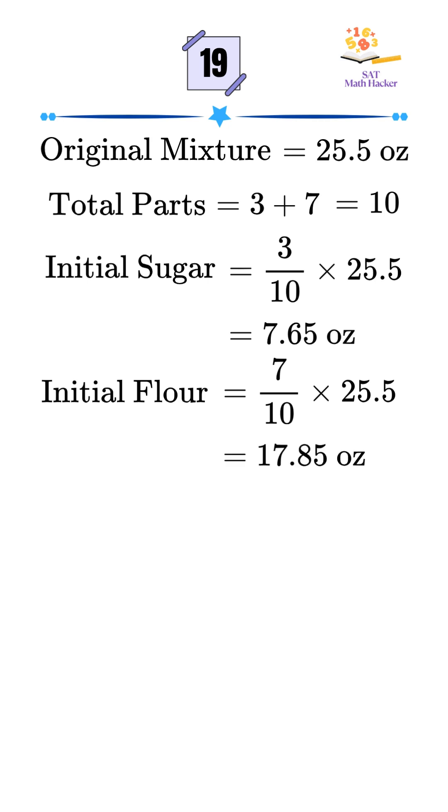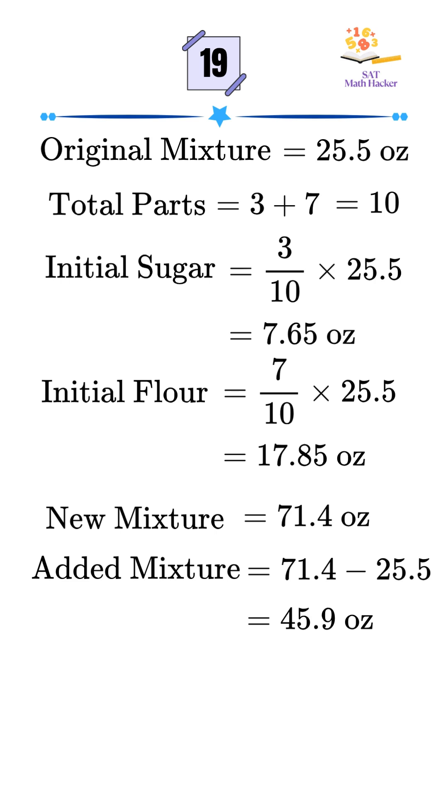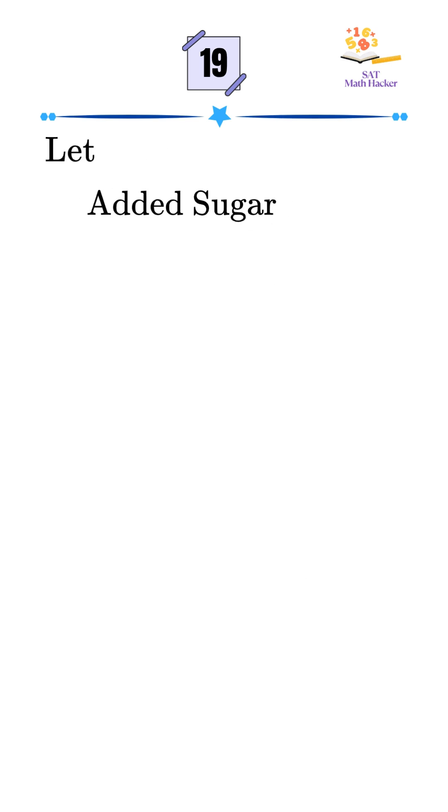After adding more sugar and flour, the new total becomes 71.4 ounces. So the added weight is 71.4 minus 25.5, which is 45.9 ounces. Let's say the amount of sugar added is S.